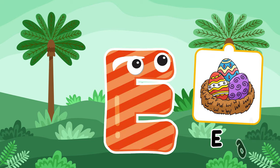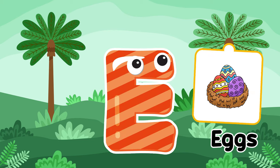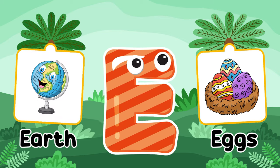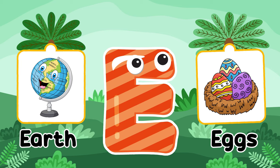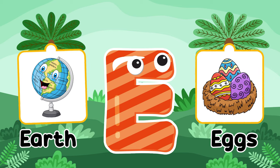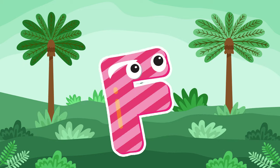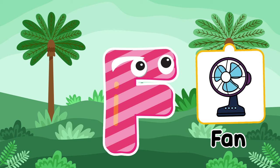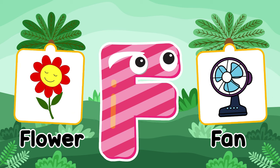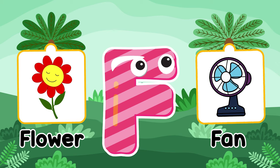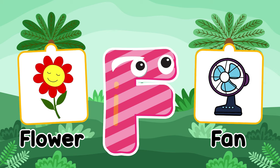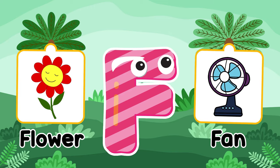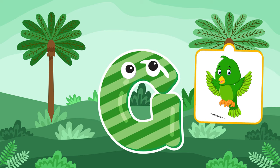E is for eggs. E is for earth. E is for eggs. F is for fan. F is for flower.